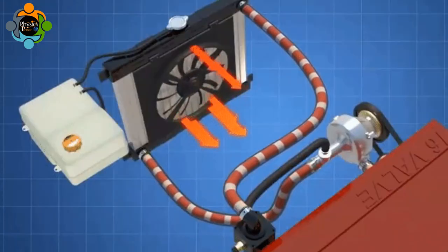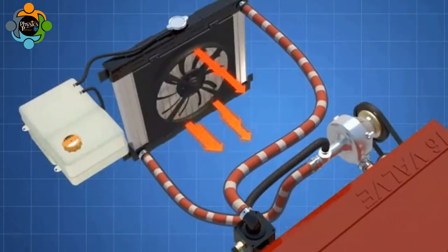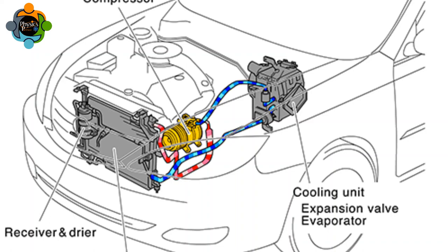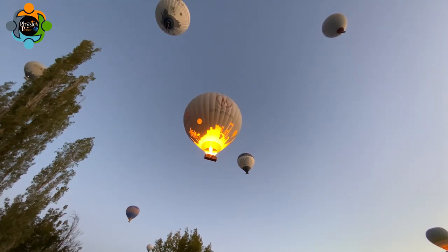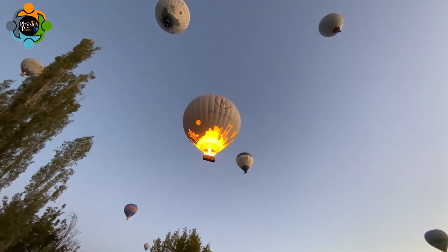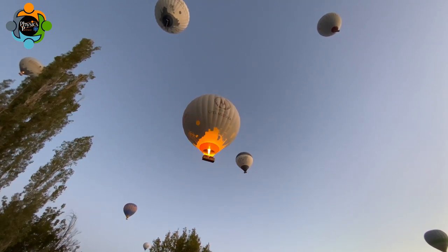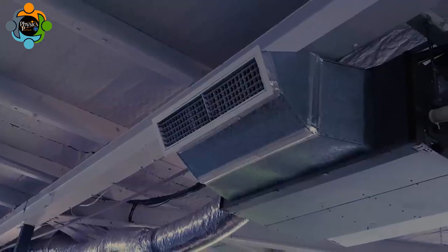Holes in the radiator allow the liquid to flow through it. The fan and the car's movement force air over the radiator. This air helps remove the heat from the fluid, which is then circulated back into the engine to keep it cool and operable.